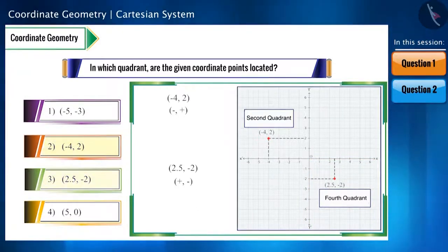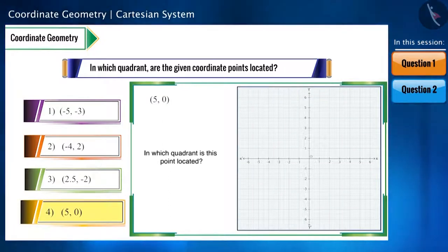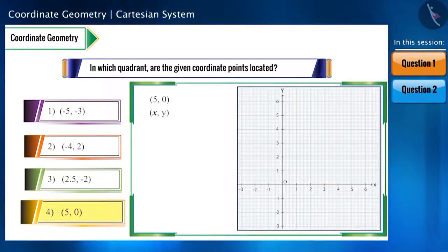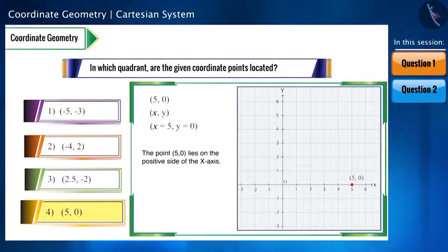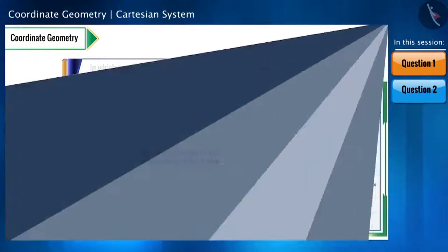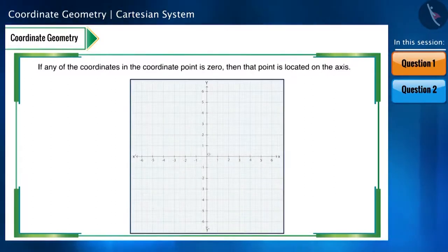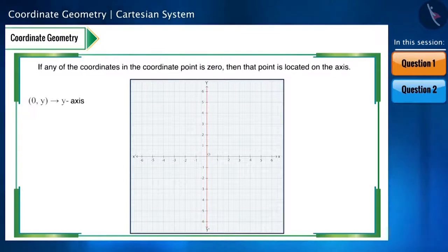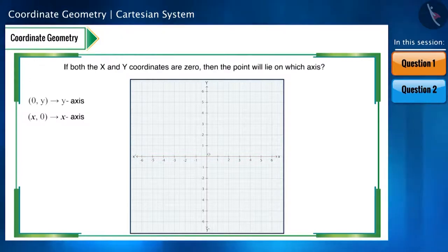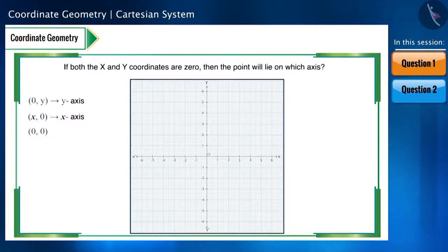Can you tell the position of the fourth coordinate point? If we see this point in the XY plane, its X coordinate is 5 and Y coordinate is 0. This point is not in any quadrant but on the positive side of the X axis at 5 units. You should remember: if any coordinate is 0, the point lies on an axis. If X is 0, it lies on the Y axis; if Y is 0, it lies on the X axis. If both X and Y are 0, that point is the origin at the center of the XY plane.